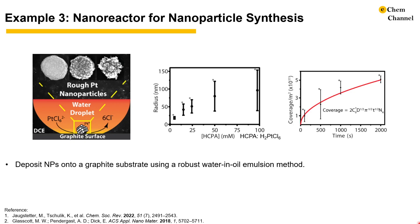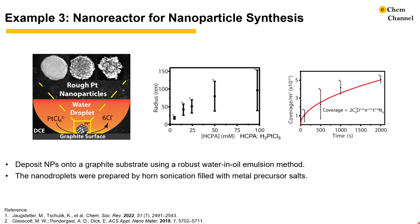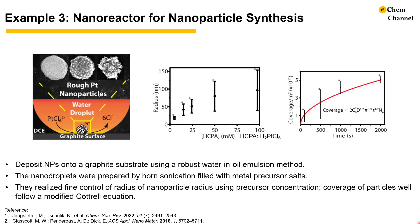In the last example of this video, Glass-Coddick and co-workers developed a method to deposit nanoparticles onto graphite with a robust water-in-oil emulsion method. They used horn sonication to produce billions of droplets per milliliter, with metal precursor salts dissolved in them. With this method, they essentially created nanoreactors and were able to control the radius, coverage, and morphology of nanoparticles with high precision.